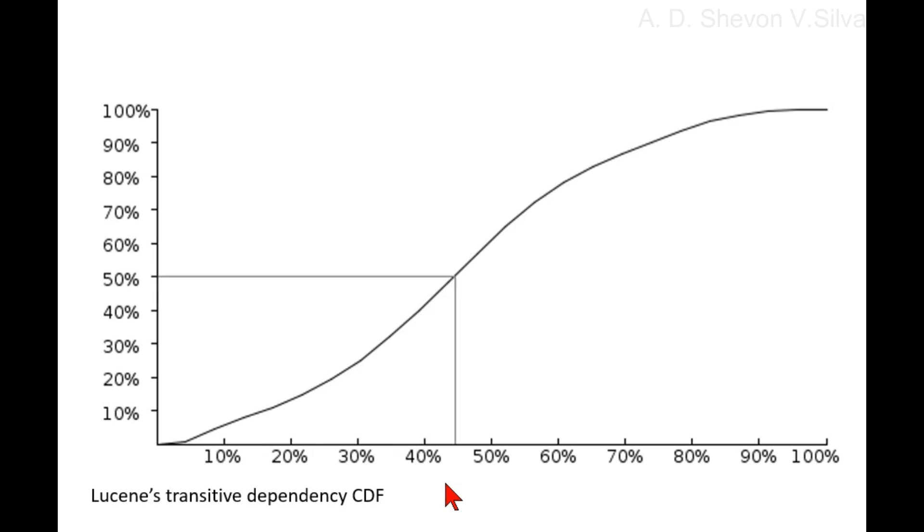As we require a figure that rises with improved structure, we shall use 100 minus this figure. So Lucene will score 100 minus 45, which is a value close to 55.